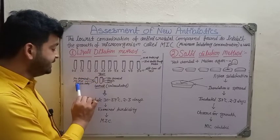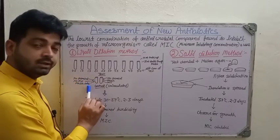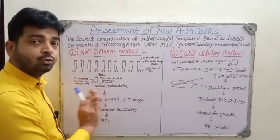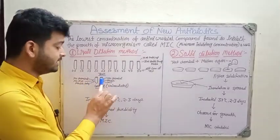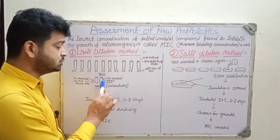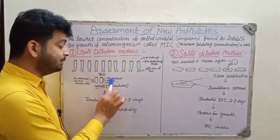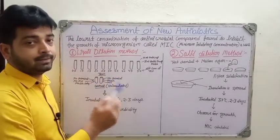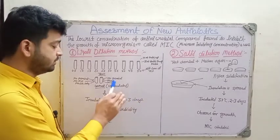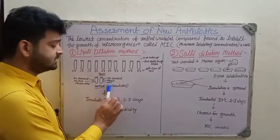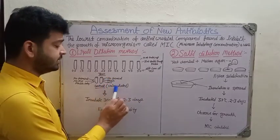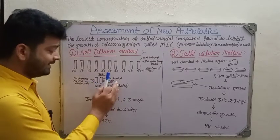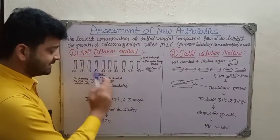Two types of controls are used. The first test tube contains media only — no test drug and no microorganism; this is the uninoculated control. The second test tube contains media and microorganism only, with no chemical added.